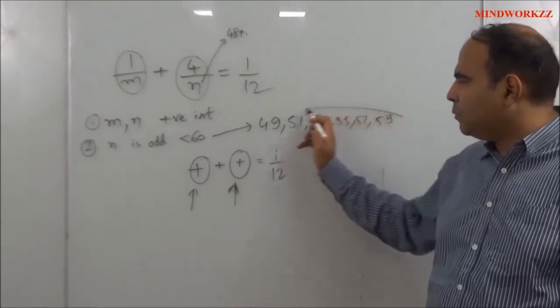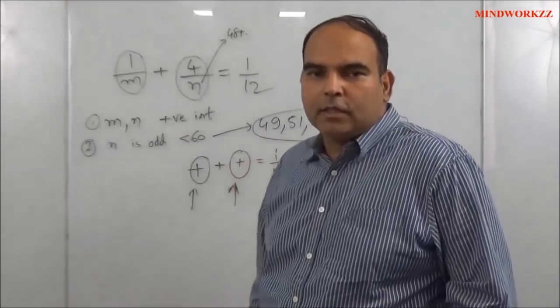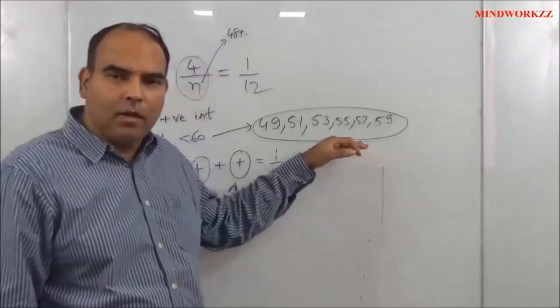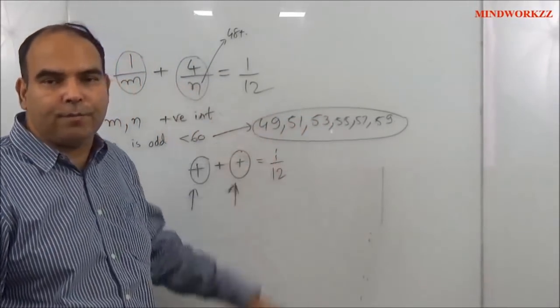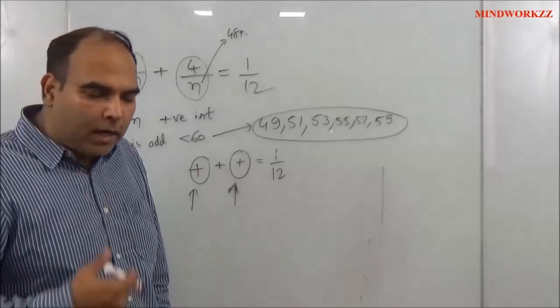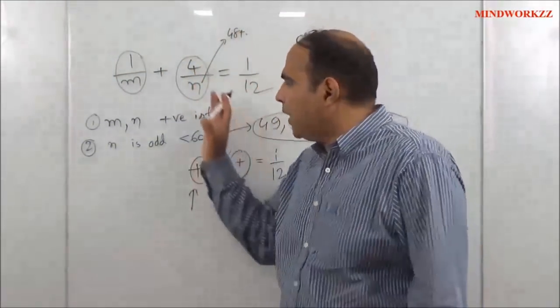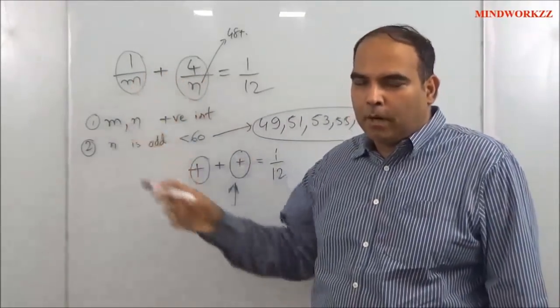And at this point you have to check at how many of these instances where n is a feasible value—at how many of these instances does m become an integer. So at this point you can straightaway start putting m as 49 and start to look for m, but it might be better